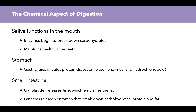This brings us to the chemical aspect of digestion. Saliva functions in the mouth — enzymes begin to break down carbohydrates, and saliva also helps maintain the health of the teeth. In the stomach, gastric juice initiates protein digestion; the stomach releases water, enzymes, and hydrochloric acid. In the small intestine, the gallbladder releases bile which emulsifies fat, and the pancreas releases enzymes that break down carbohydrates, protein, and fat — the macronutrients.